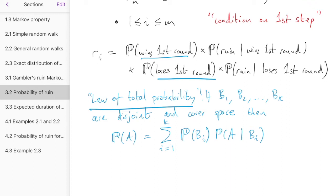Okay, well let's go back to that equation and see if we can fill in any of the terms. R_i equals, the first term is the probability Alice wins the first round. Oh, well we know that, right? The probability she wins the first round is P. Okay, the second term is the probability that Alice ruins given she wins the first round. So if Alice wins the first round, she goes up from having i pounds to having i plus one pounds.